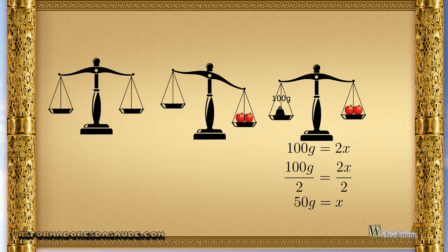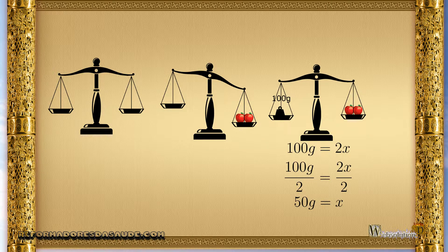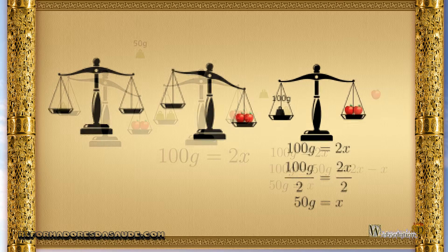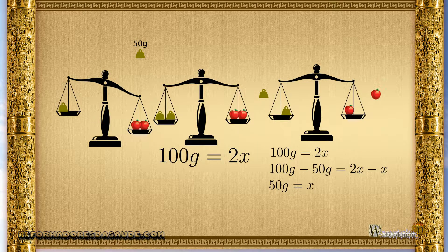And so we see the principle of the equation. But now imagine that we have both fruits and put a weight of 50 grams. The balance is unbalanced, but if we now put two 50-gram weights, then the balance will be balanced. But if my goal is to know how much a fruit weighs, then I take a weight and I take a fruit.